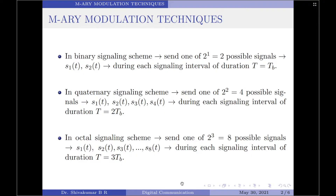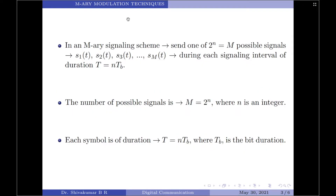Now with this as the foundation, we can start the discussion on M-ary signaling schemes. In an M-ary signaling scheme, we will send 1 of 2^n = M possible signals, denoted by s1(t) through sM(t). One of the M possible signals is transmitted during each signaling interval, and this signaling interval is given by T = n·Tb. We have M possible signals in total, hence the name M-ary signaling scheme, and each symbol has length n, so T = n·Tb.